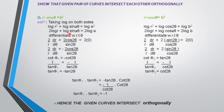Then we differentiate with respect to θ on both sides. It becomes 2·(1/r)·(dr/dθ) plus the differentiation of log sin2θ, which is (1/sin2θ) times cos2θ times 2, equal to 0, since differentiation of log a (constant) is 0. Then 2/r · dr/dθ = −2cos2θ / sin2θ.